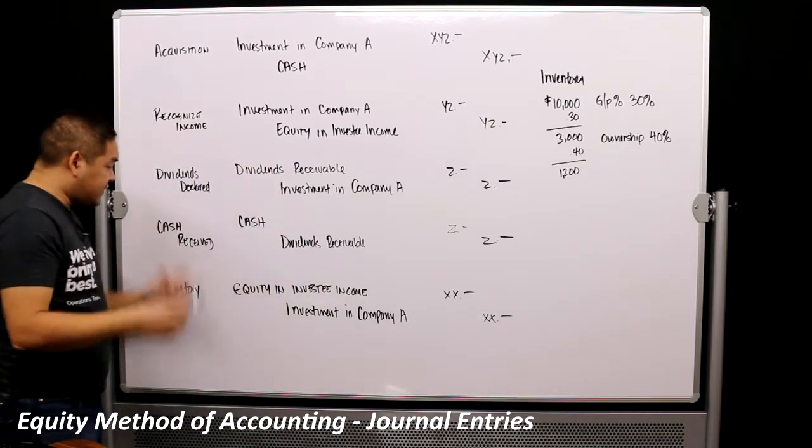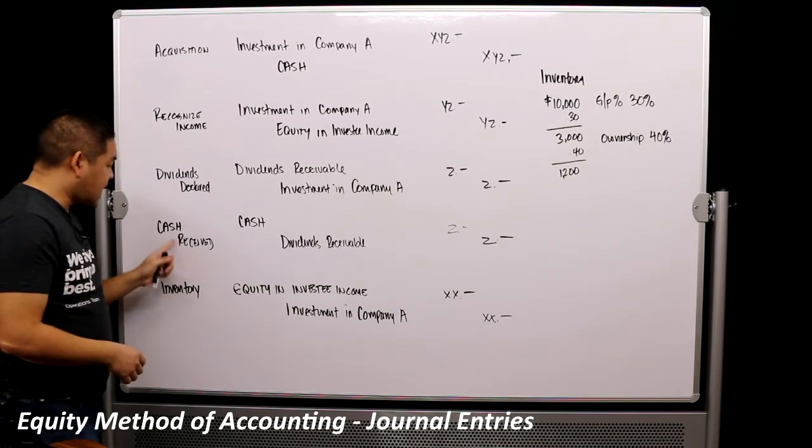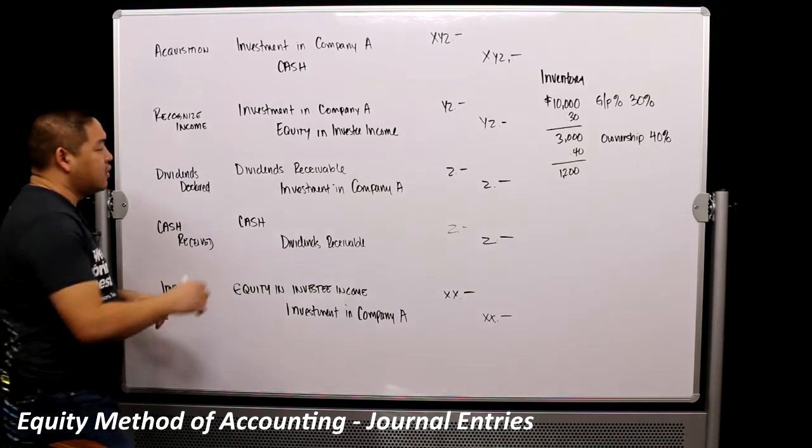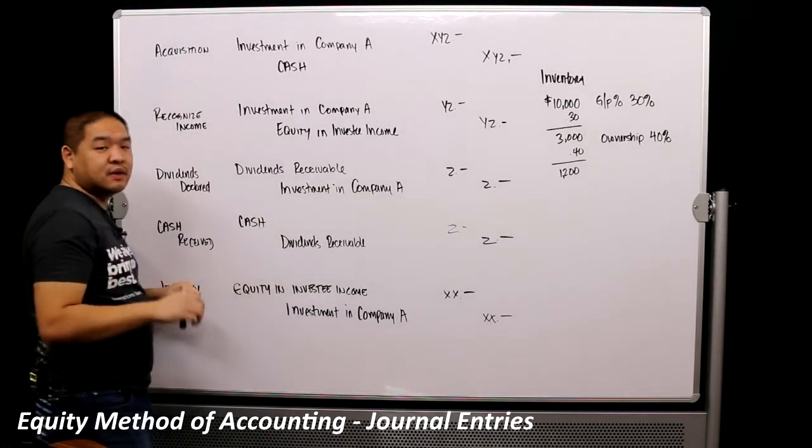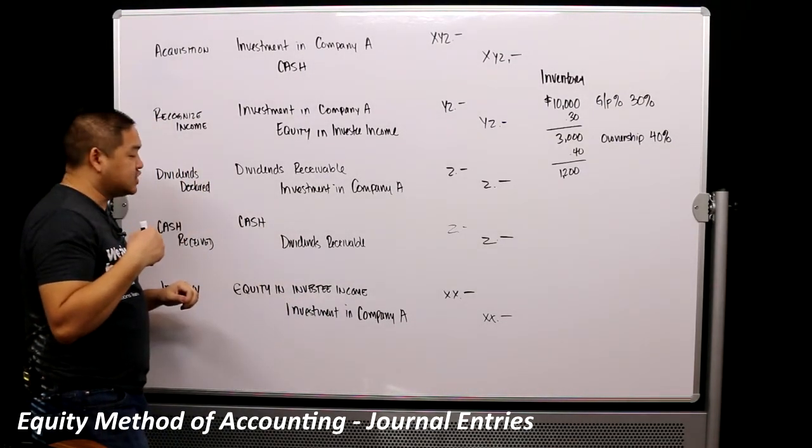Alright, and then standard financial accounting journal entry cash received when the cash is received. We reduce our dividends receivable down to zero, hopefully. So that's why there's a credit for dividends receivable. In return, we receive cash, okay?